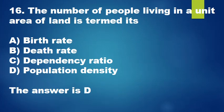Question 16: The number of people living in a unit area of land is termed its: A. Birth rate, B. Death rate, C. Dependency ratio, D. Population density. The answer is D.